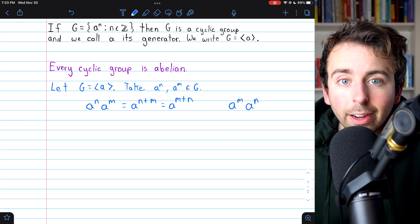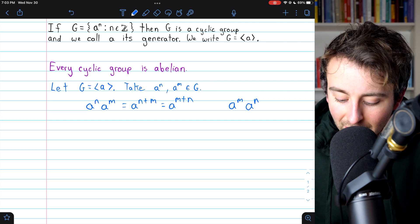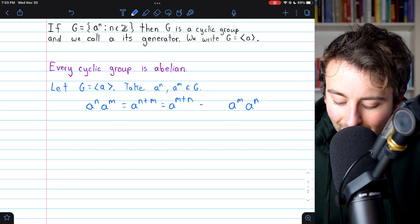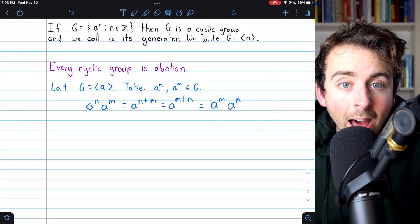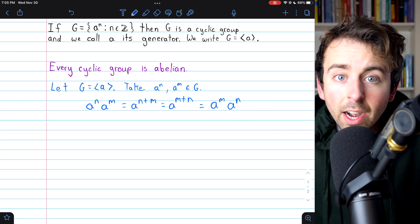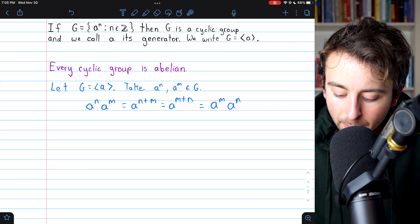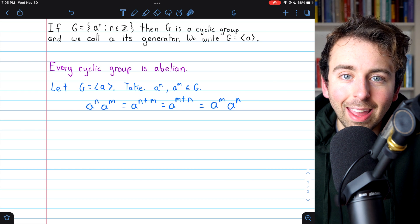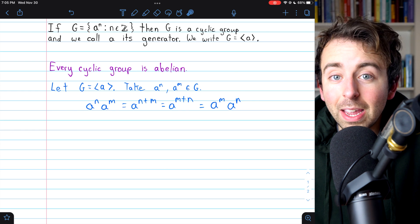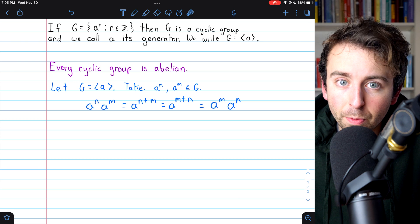But then again, using our exponent rules, but in the opposite direction, A to the M plus N is the same as A to the M times A to the N. And remember, I'm saying times A to the M times A to the N, but the operation may not be multiplication. We don't know what the operation is. It doesn't matter. But we're done the proof.